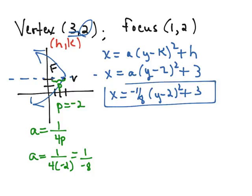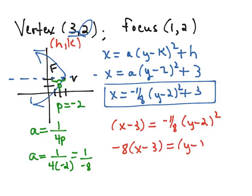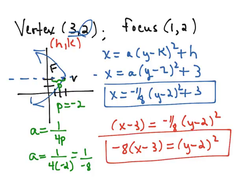Now this is my favorite way to write the equation for a parabola. The book likes to write their standard form a little bit differently. So they would subtract the 3 from the equation and say that this is x minus 3 equals negative 1 eighth of y minus 2 squared. And then they would multiply by negative 8 on both sides to get rid of the negative 1 eighth. And so they would say negative 8 times x minus 3 equals y minus 2 squared. And so this is also an equation for this parabola.